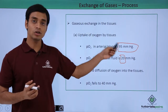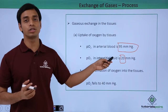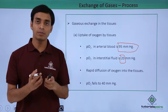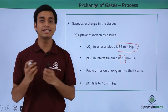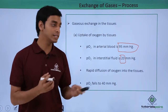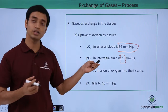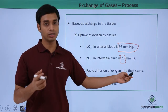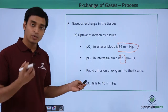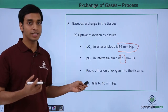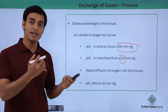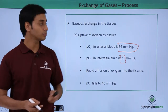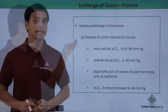There is a huge difference in the partial pressure of oxygen between the blood and the interstitial fluid, so oxygen easily diffuses into the cells. Because of this rapid diffusion of oxygen into the tissues, the partial pressure of oxygen falls back to 40 mmHg.